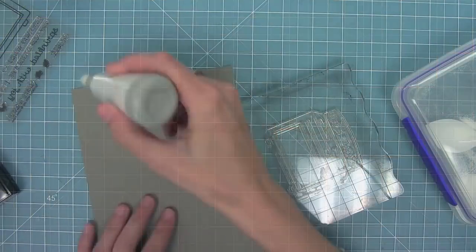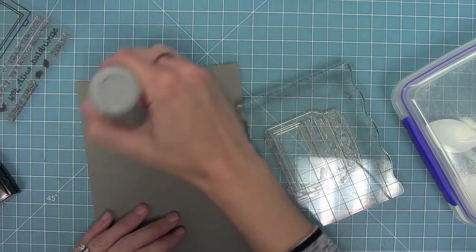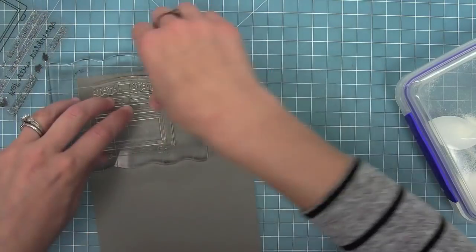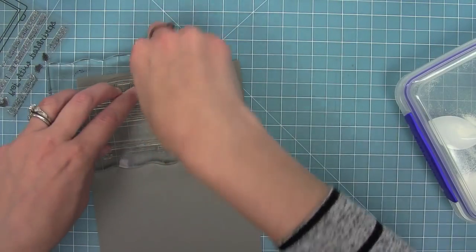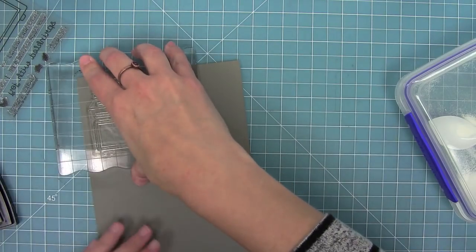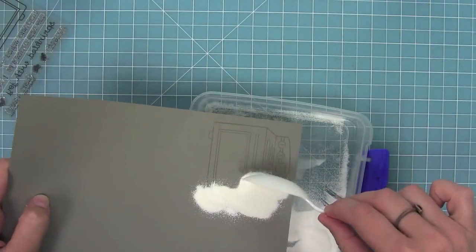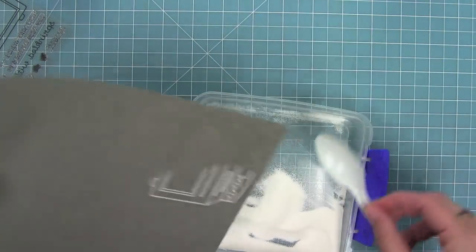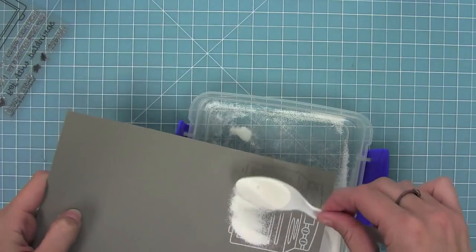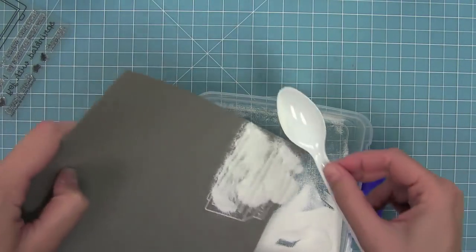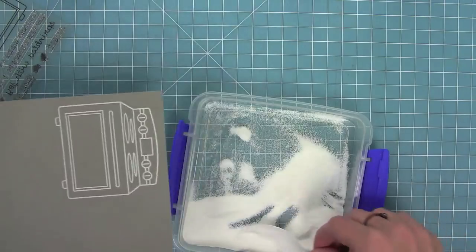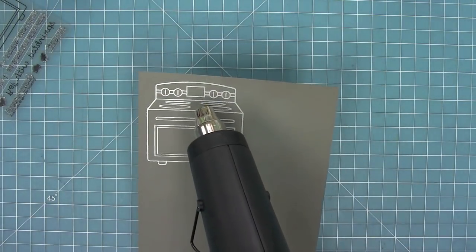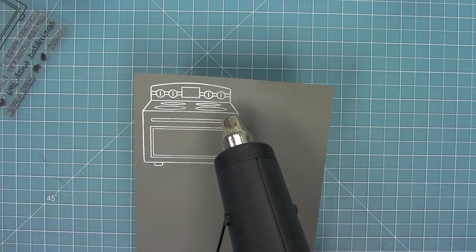I'm going to use my anti-static powder tool on some narwhal cardstock because I'm going to white heat emboss. I'm stamping that oven in some sticky Versamark ink and then I can put my white heat embossing powder on there. Once I get that completely covered in white heat embossing powder I can go ahead and heat that up. I love how this oven is looking.